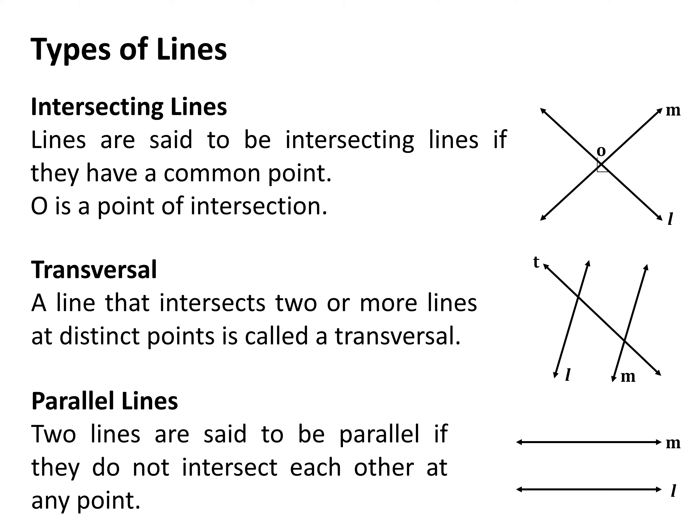Students, now I will explain types of lines. The first one is intersecting lines. Lines are said to be intersecting lines if they have a common point. Here in the figure, line L and line M are intersecting each other at point O, so O is the point of intersection. Clear children?